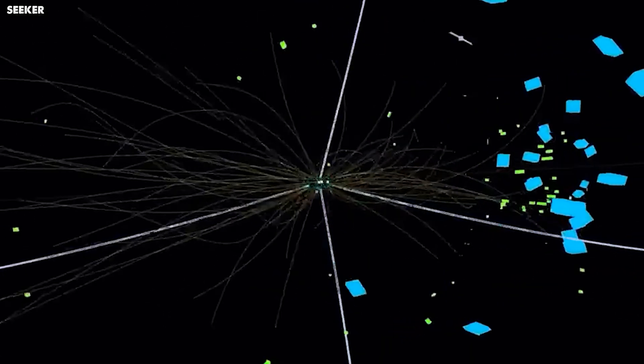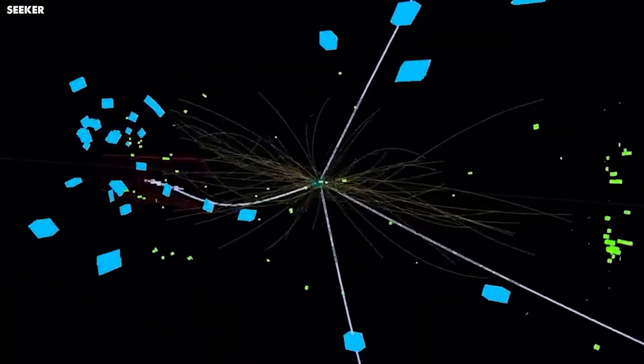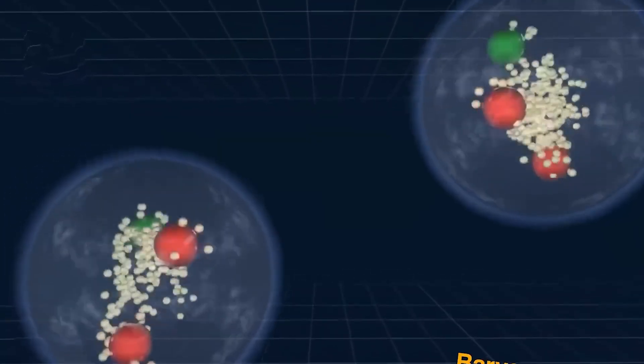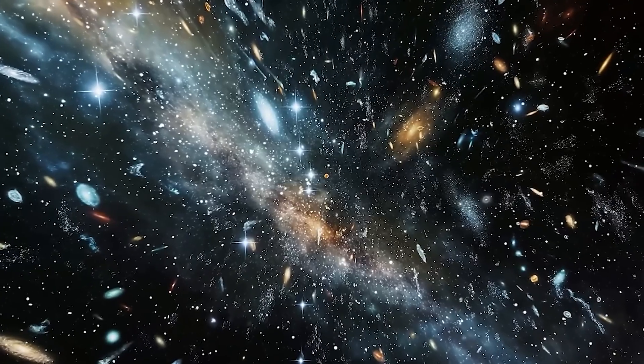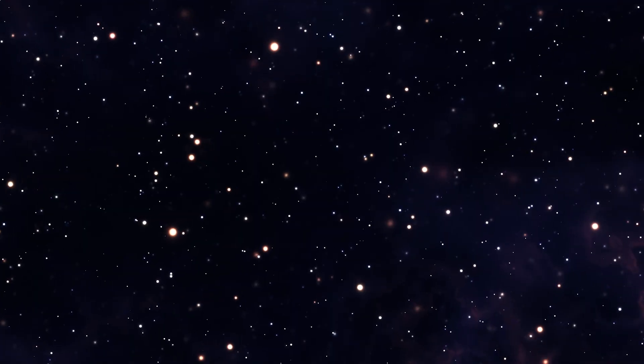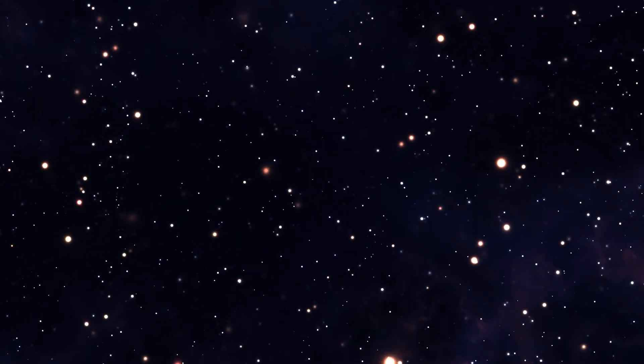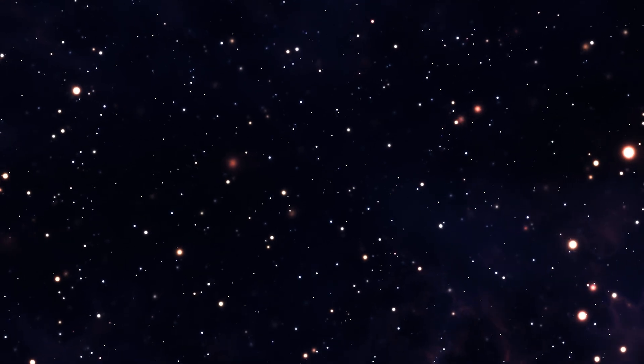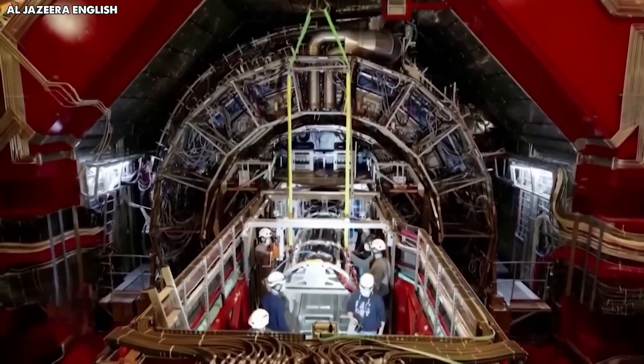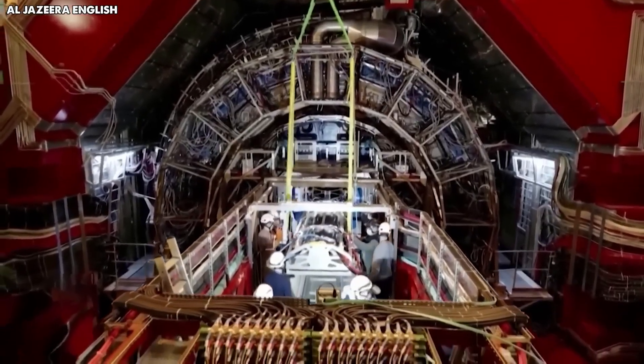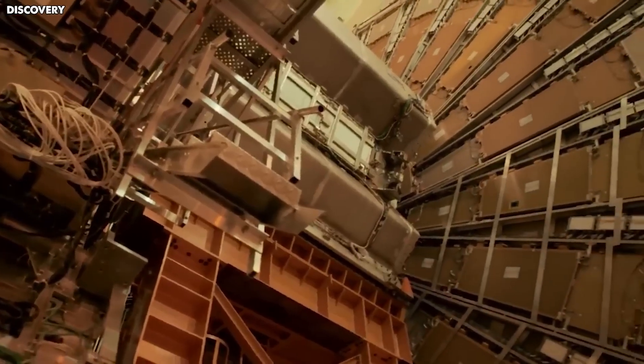The standard model of physics actually predicted some of this, but not nearly enough to explain all the matter we see, which means there might be even crazier physics we haven't discovered yet. So where do we go from here? The discovery of CP violation in baryons is changing our understanding of baryogenesis, the insane process that explains how our universe went from a hot soup of nothing to the cosmos we have today. It proves the universe isn't just random, it's run by subtle, powerful rules we are just now starting to figure out.